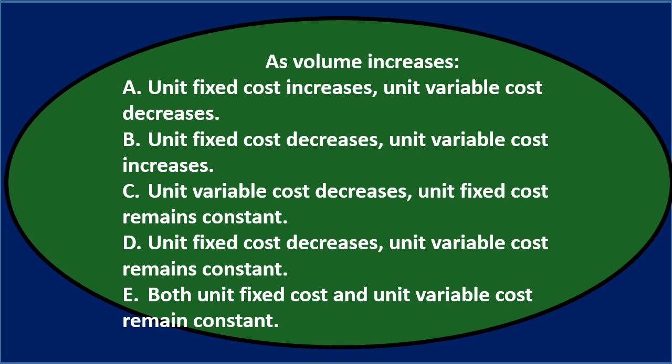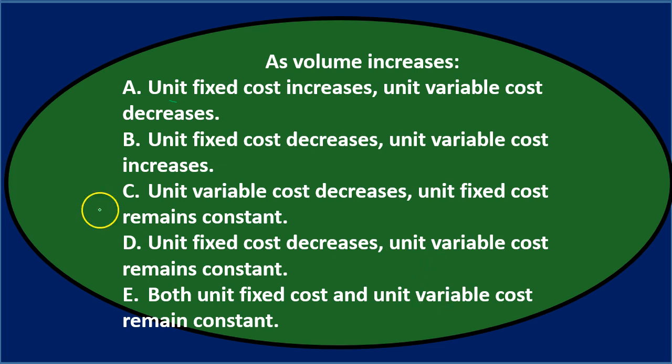Let's go through this using the process of elimination. As volume increases, we're talking about fixed costs and variable costs — usually in the context of standard costs applied to overhead. Notice that all the answer choices refer to unit costs, not total costs. That's the key distinction that makes this question tricky.